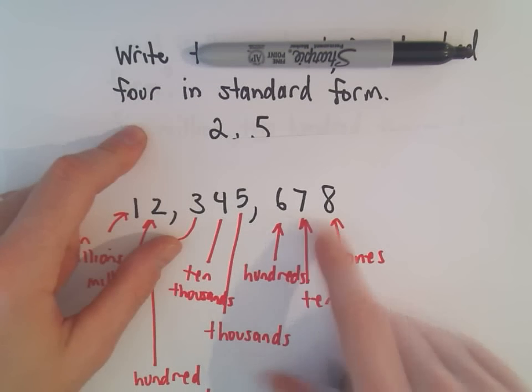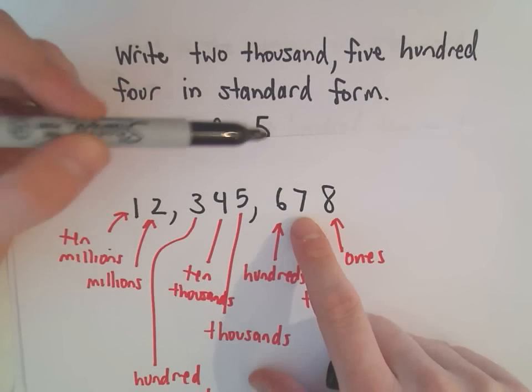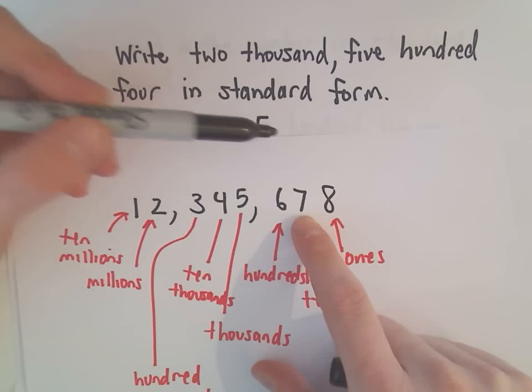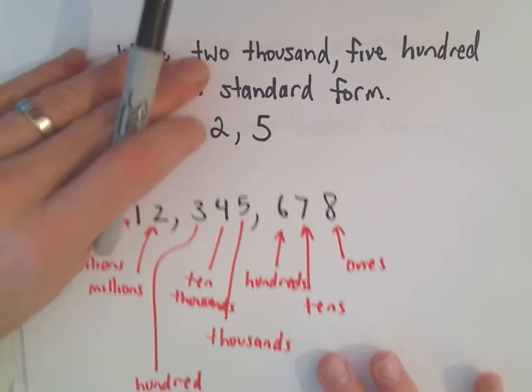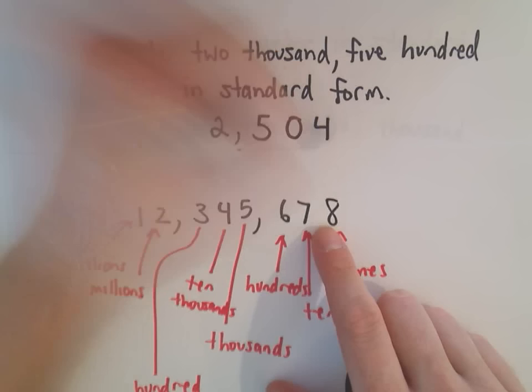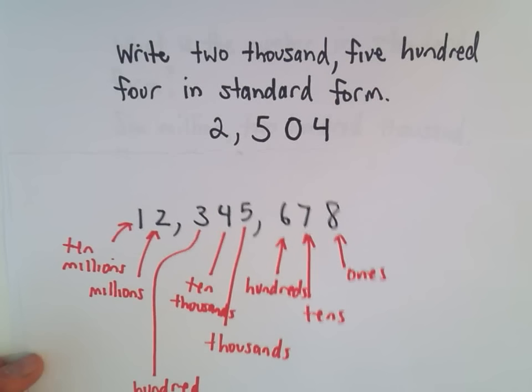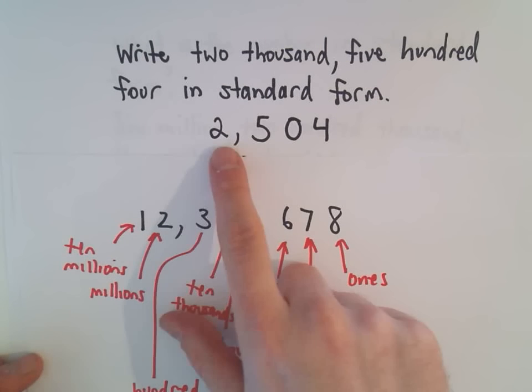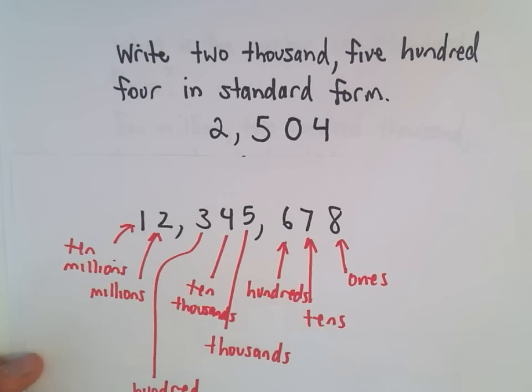And then the last part of the statement, it says we also have the number 4. Well, the number 4, there's no tens, right? It's not 14, or 24, or 34, because that would be 14, 24, 34. So since it's just plain old 4, we can write 4 as 04. And now we've got the number 2,504 in standard form.